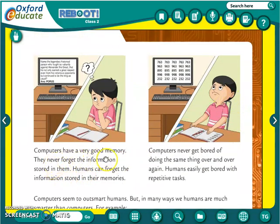Computers have a very good memory — they never forget the information stored in them. Humans can forget the information stored in their memories. Whatever information we put into a computer, it never forgets. But we humans can forget information stored in our memories — sometimes we can forget something, but the computer never forgets.